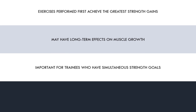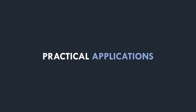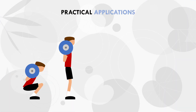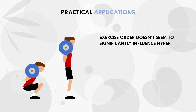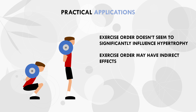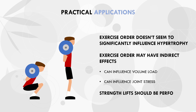So what practical applications can we conclude from all of this information? It is difficult to draw strong conclusions from the available data. However, despite common practice, the order of exercises in a training session doesn't seem to have any significant direct influence on muscle growth, at least within the timeframes of these studies. Exercise order may influence muscle growth indirectly via its effects on volume load and joint stress. Using a pre-fatigue strategy will limit volume load while still achieving similar hypertrophy outcomes, and may be useful for limiting joint stress during times of irritability. Lastly, if trainees have simultaneous strength goals, they should train the exercises they want to get stronger at first in the session.